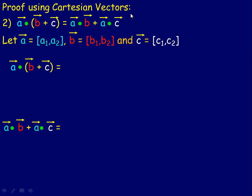Another proof using Cartesian vectors, we're going to prove the distributive law that a dot (b + c) equals a dot b plus a dot c. And we're going to do that using Cartesian vectors. So I'm going to let a be [a₁, a₂], b be [b₁, b₂], and c is the vector [c₁, c₂]. We're going to calculate both of these just to demonstrate that they are the same, and hence prove it that way.